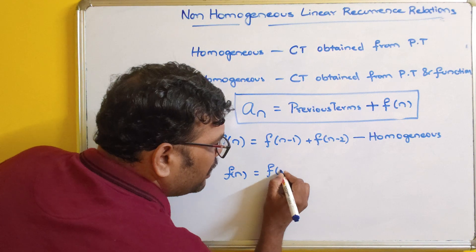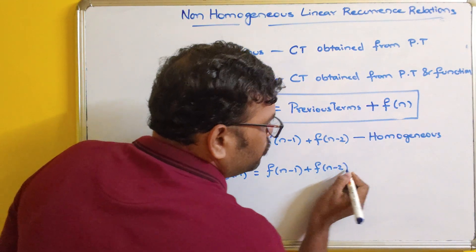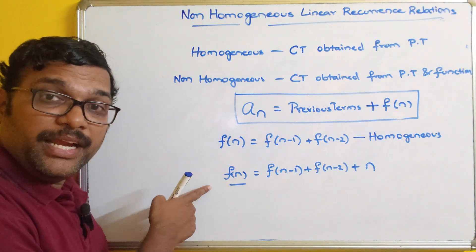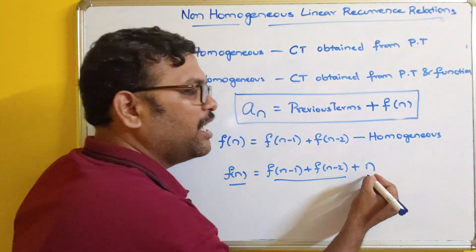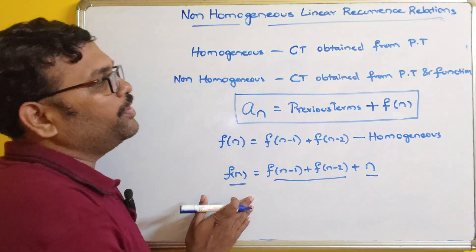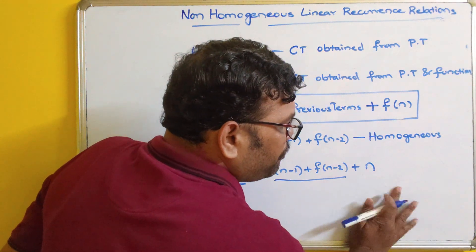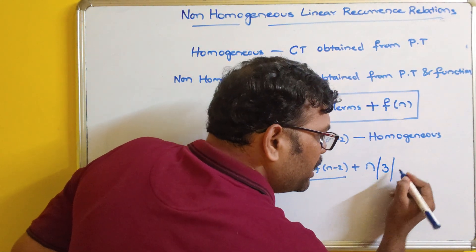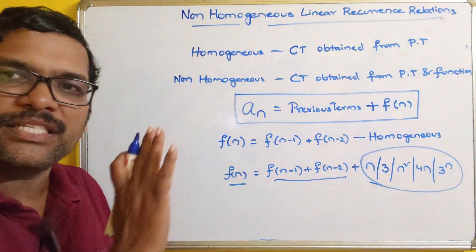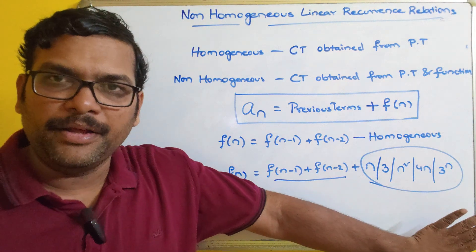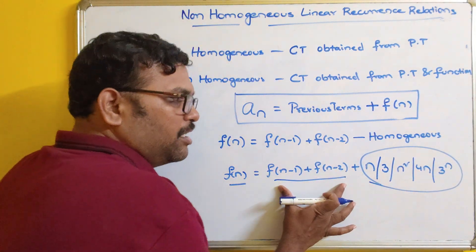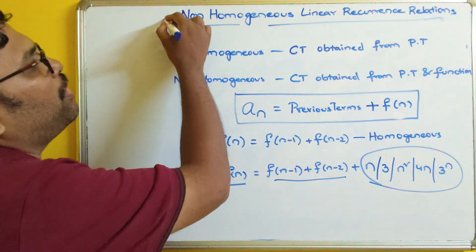For example, if F(n) = F(n-1) + F(n-2) + n, then we are getting the current term from two previous terms plus n. N does not belong to the previous terms, so such a relation we call non-homogeneous. Here, n can be there, or some constant like 3, or n squared, 4n, or 3 to the power n. All these kinds of terms do not depend on the previous terms — they are completely independent. If addition to the previous terms there is some other independent term, then we call it non-homogeneous.